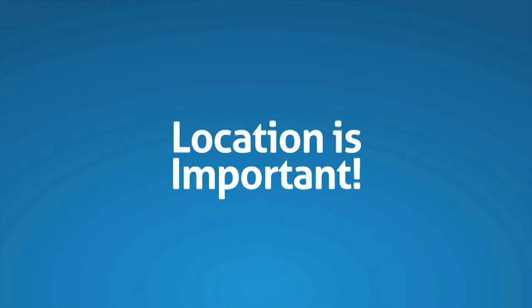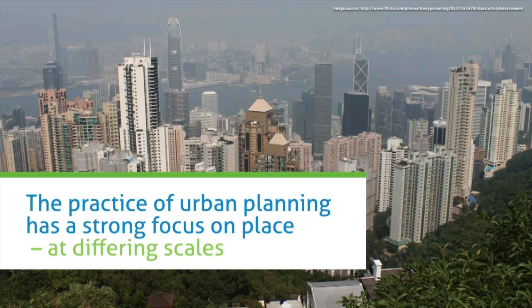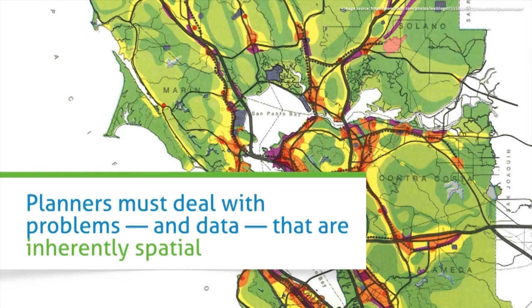In many disciplines, location is a critical piece of information when thinking about problems that society must address. In urban planning, there's a strong focus on place and understanding place at different scales. Planners deal with problems and data that are inherently spatial in nature, making GIS an incredibly helpful tool in the field.